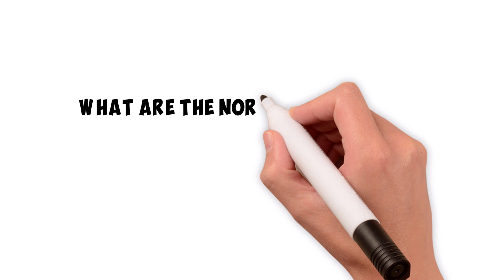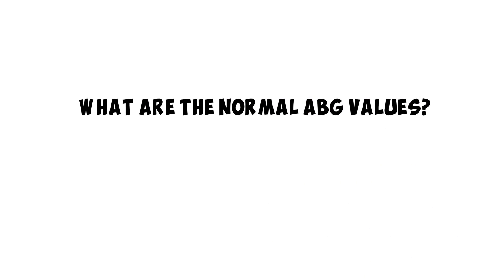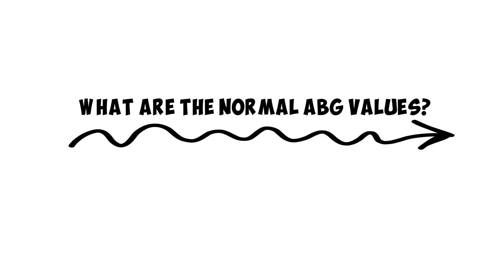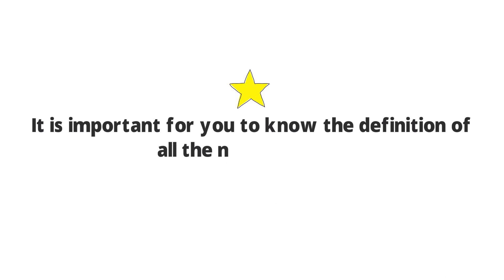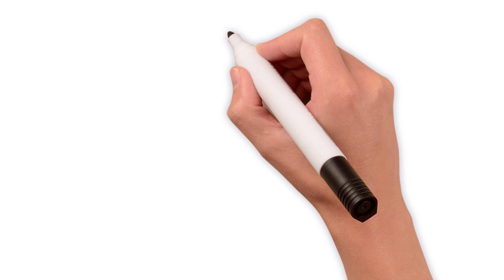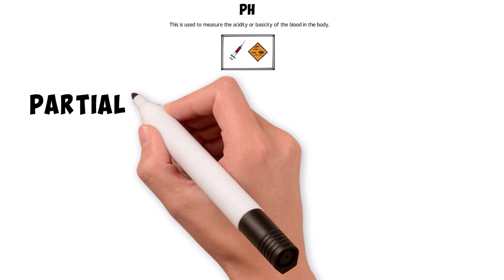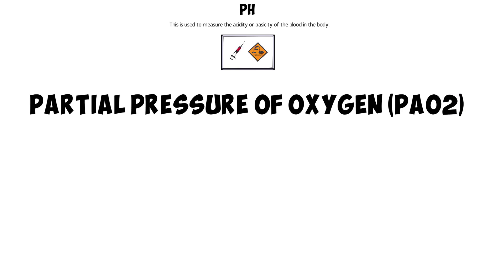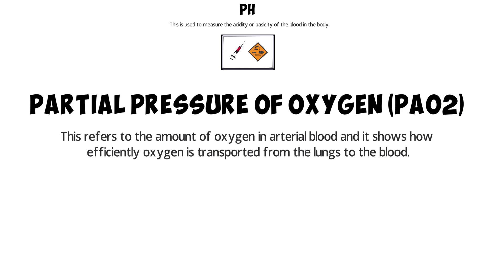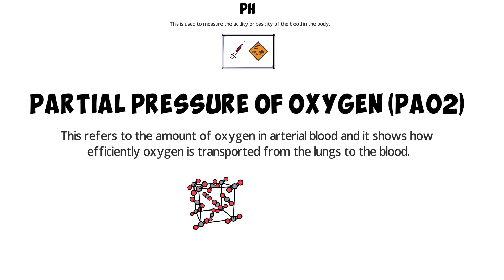What are the normal ABG values? To better understand the key elements in an ABG test, it is important to know the definition of all the normal values. First, you have the pH, which is used to measure the acidity or basicity of the blood in the body. Next, there is partial pressure of oxygen, or PaO2, which refers to the amount of oxygen in arterial blood and shows how efficiently oxygen is transported from the lungs to the blood.